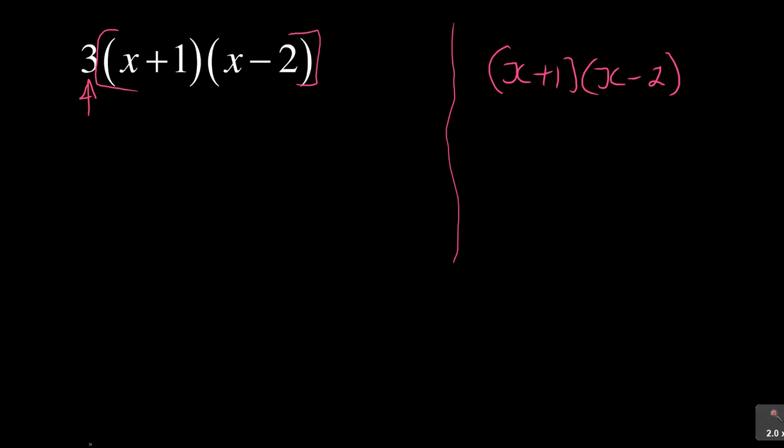How do you multiply? When multiplying the brackets, x multiplies x to give x². Then x multiplies -2 to give -2x. Next, 1 multiplies x, which is positive 1x, and 1 multiplies -2.